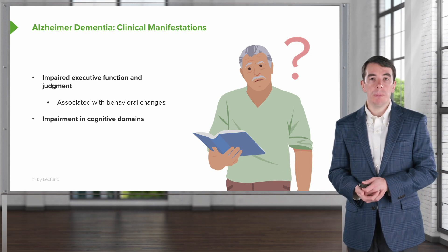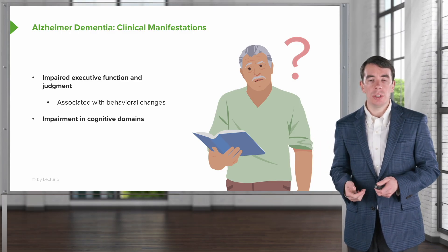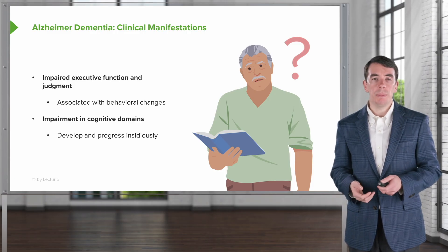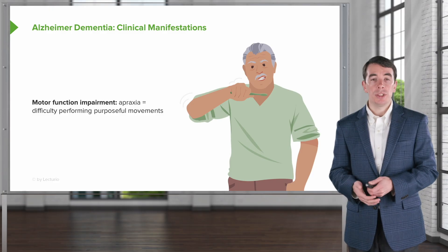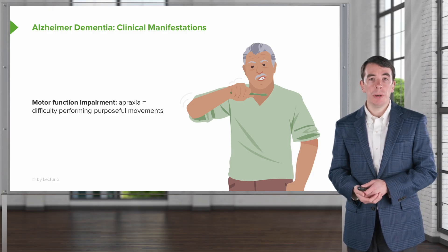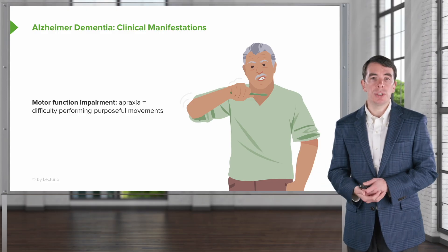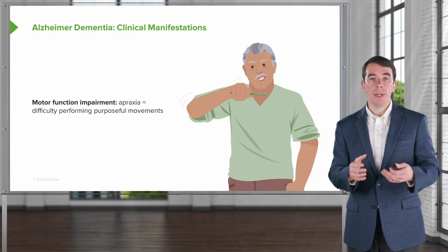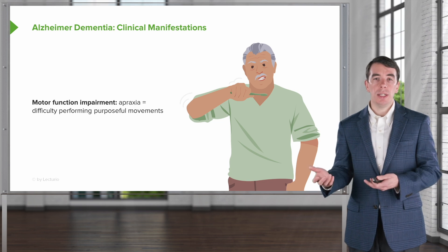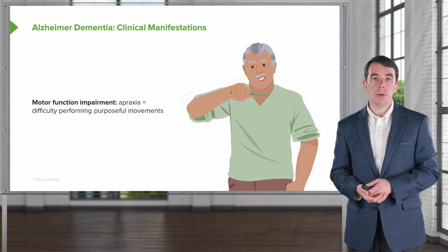We do look for and can see impairment in other cognitive domains — apraxia, agnosia, and aphasia, in addition to that early amnesia. These may develop and progress insidiously as well. Patients may develop motor functional impairment. We think about apraxia, or the planning of movements, which appears as difficulty performing purposeful movements, such as showing how you would brush your teeth, cut a slice of bread, or demonstrate a motor task.